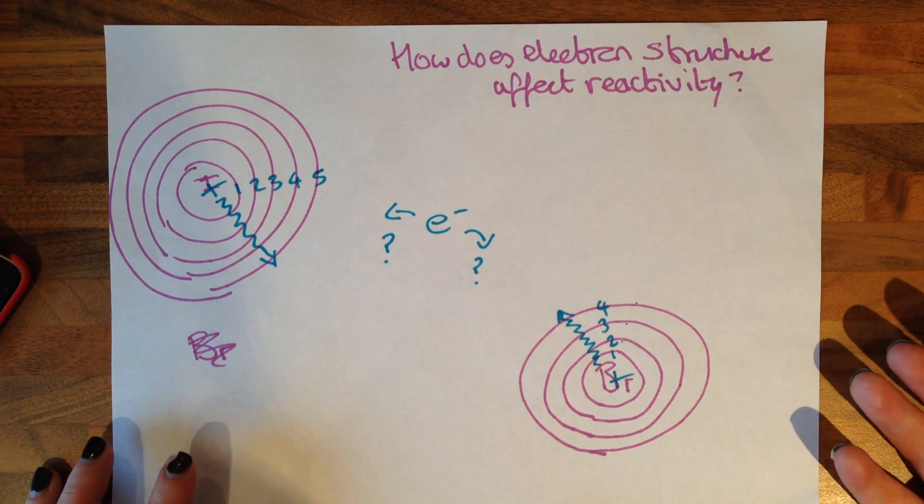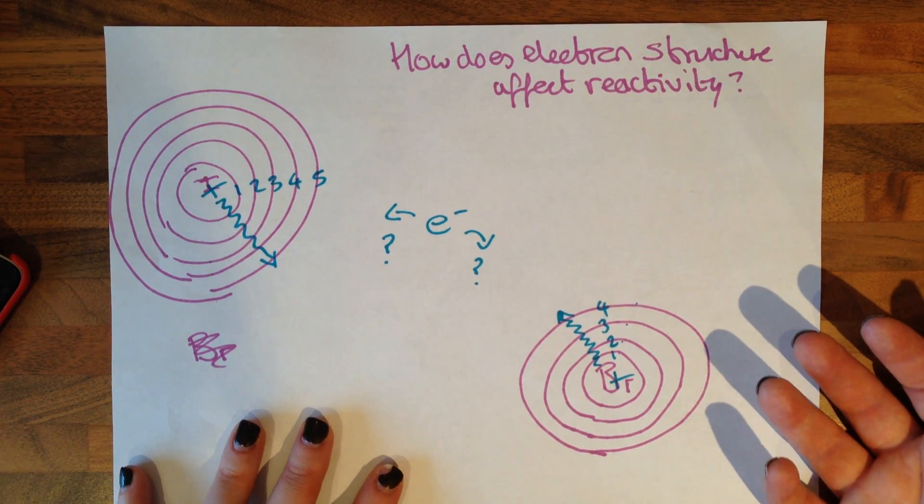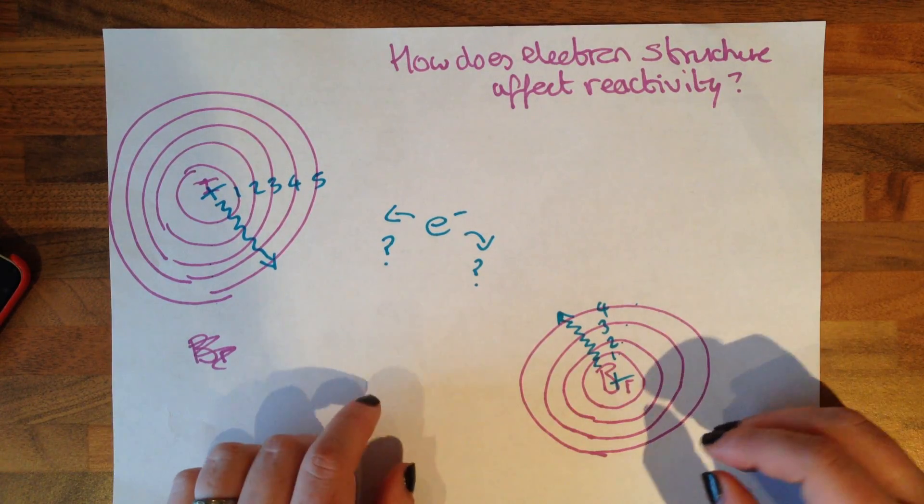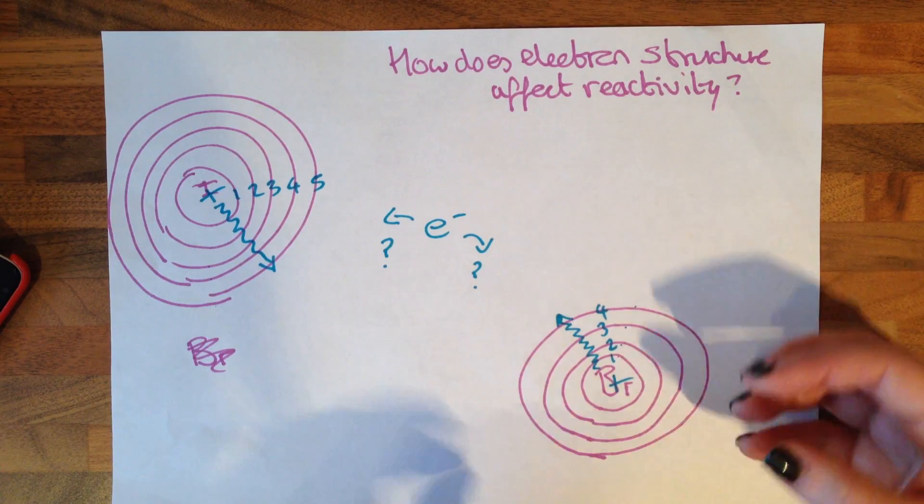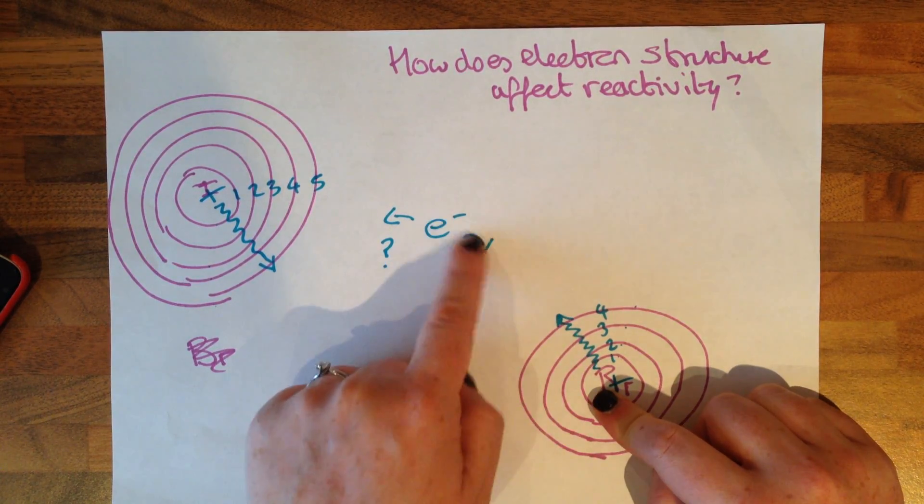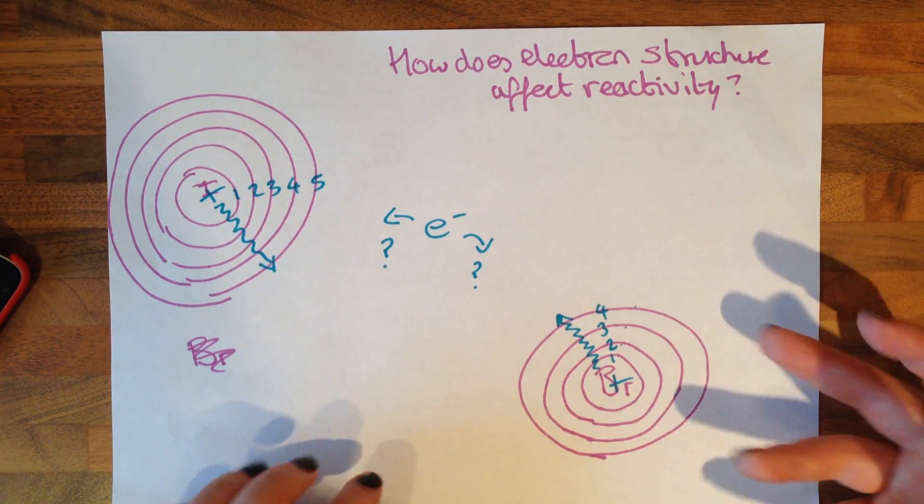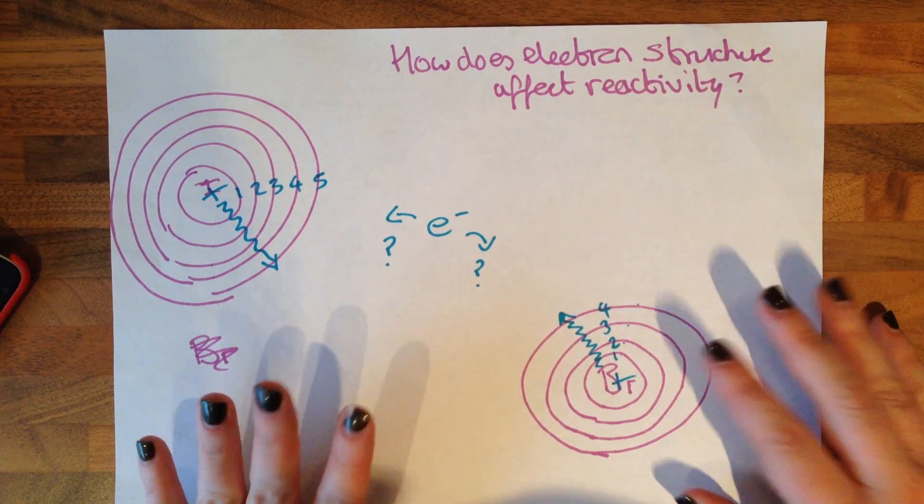And a bit like the group one, you need to know how does the electron structure affect reactivity. And it's very similar, but it's slightly different. So here we need to be gaining an electron. We need to be pulling it in. And the positive nucleus needs to reach out and pull this electron in. And the more shells that are in the way, the less successful it's going to be at pulling that electron in. So the less reactive it's going to be.